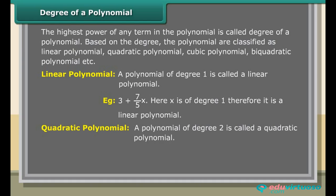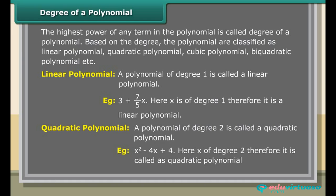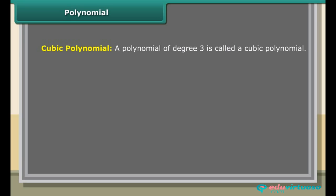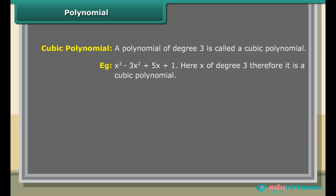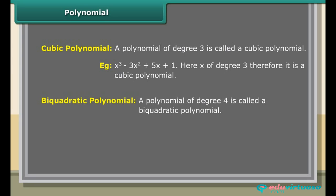A polynomial of degree 2 is called a quadratic polynomial. Example: x² − 4x + 4 — here x is of degree 2, therefore it is a quadratic polynomial. A polynomial of degree 3 is called a cubic polynomial. Example: x³ − 3x² + 5x + 1 — here x is of degree 3, therefore it is a cubic polynomial.